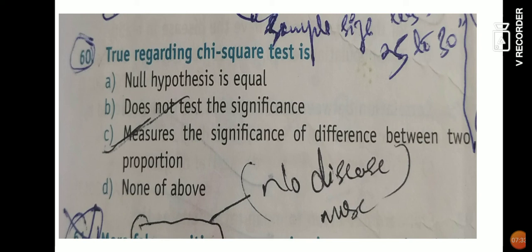For more MCQs on chi-square test, I'll be making more videos where I'll differentiate between paired test, unpaired test, and chi-square test, and give more mnemonics. In my next video we'll discuss Fisher's test, Oba test, and all the differences between these. That's enough for today — thank you for watching. Please subscribe, like, share, and comment on my video.